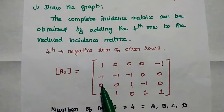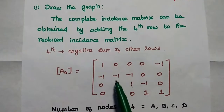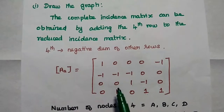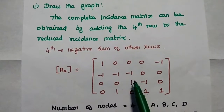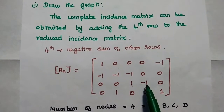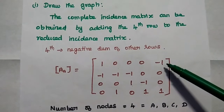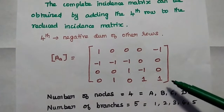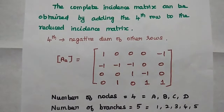For the first column: 1 minus 1 plus 0 equals 0, and the negative value is also 0. For the second column: 0 minus 1 plus 0 equals minus 1, so the negative sum gives plus 1. For the third column: 0 minus 1 plus 1 equals 0. For the fourth column: 0 plus 0 minus 1 equals minus 1, so the negative gives plus 1. For the fifth column: minus 1 plus 0 plus 0 equals minus 1, giving plus 1 for the 4th row.